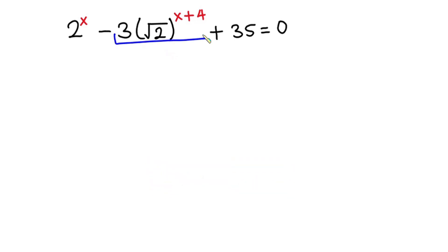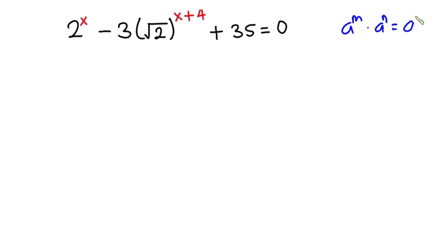Because of what we have here, let me explain something to you. If I have a to the power m times a to the power n, this is equal to a to the power m plus n. The reason is that we have the same base multiplying, so you just write it once and then sum the exponents.